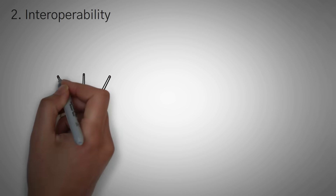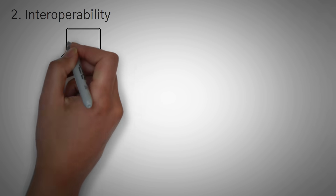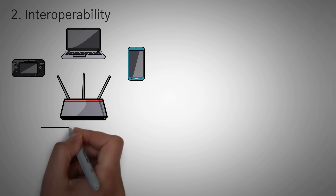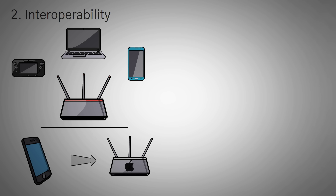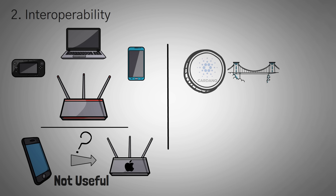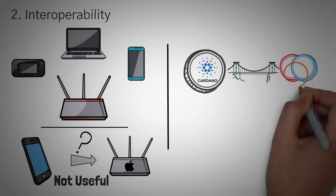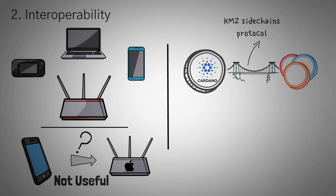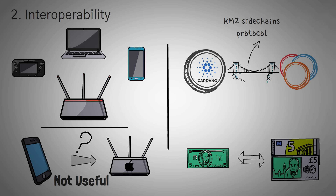Moving on, the second problem is interoperability. This is a very old technological problem. Let's think about this using an example of early wireless networking. If you've ever wanted to set up a wireless network in your house, you know you have to connect your devices with a router so that the signal can reach your device. But what if your Apple iPhone only connected to Apple routers? It wouldn't be very useful if everybody had to get all the same hardware from the same brand — and in fact, that would probably be considered a monopoly by the United States government. So how does Cardano make sure that crypto doesn't suffer from the same problem? It allows people to easily bridge Cardano and other cryptocurrencies using the KMZ Sidechains Protocol — basically the crypto version of easily exchanging U.S. dollars for Canadian dollars or euros.